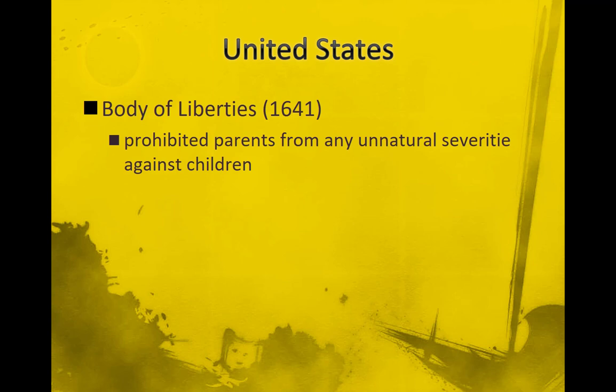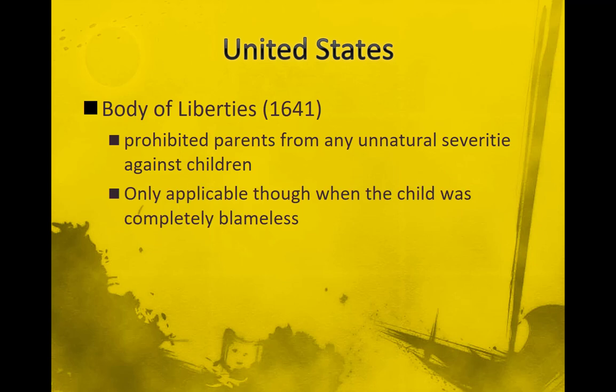The Puritans had a dim view about children, so they offset this law with another piece stating the law was only applicable when the child was completely blameless. You might ask why you would blame the child, but the Puritans viewed children as being born evil, and that parents had to break them of this evil. Instead of the Renaissance view that thought of children as innocent, the Puritans believed children were not innocent and had to be taught and broken of their evilness.